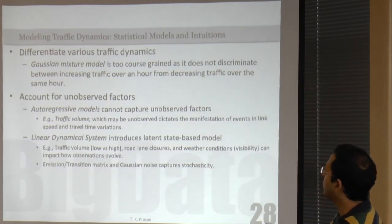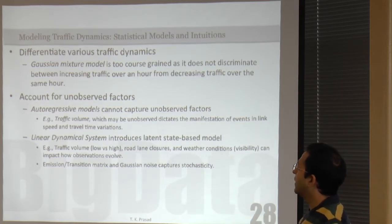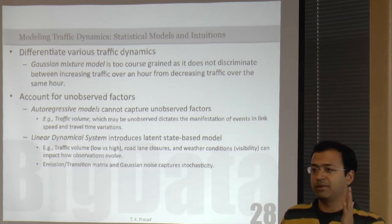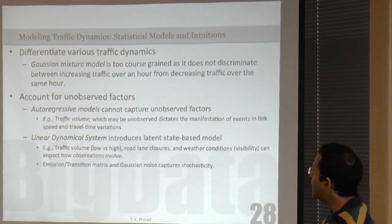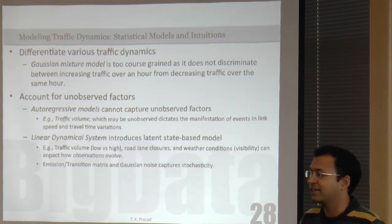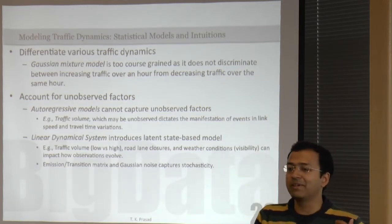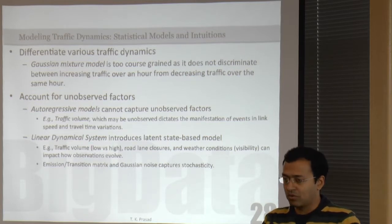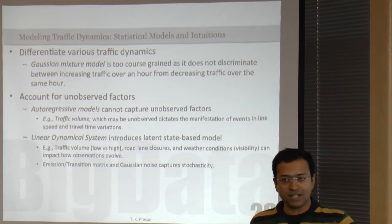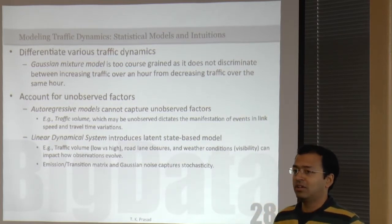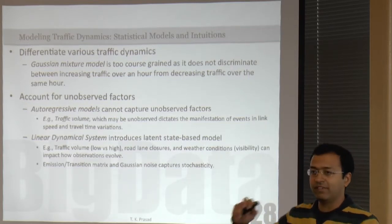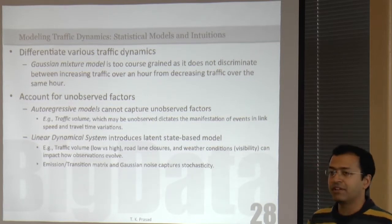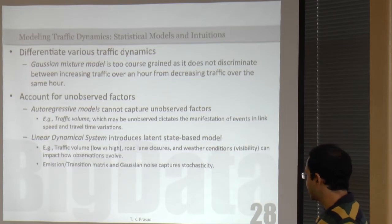Let me give you a quick glance at various statistical models. If I had to model traffic dynamics, I need to differentiate various dynamics — decreasing, increasing, steady — and I can't do that using GMM. Maybe autoregressive might help, but there is also the second thing: accounting for unobserved factors. Maybe I have partial events, maybe I don't have all the events I really need to analyze my data. Autoregressive models are another popular way of analyzing time series data, but they don't capture the intuition we want — accounting for hidden factors. So we use something called linear dynamical systems, which does the job.